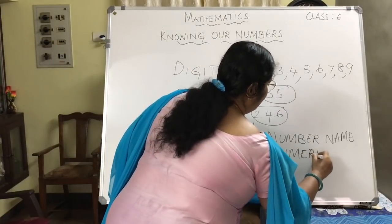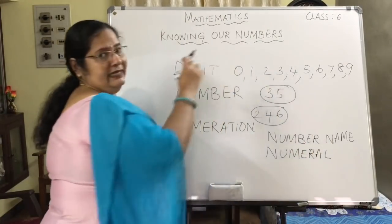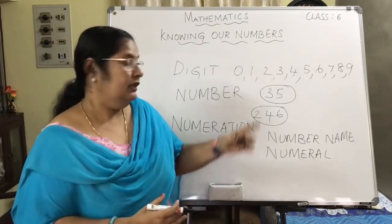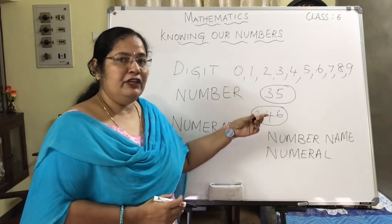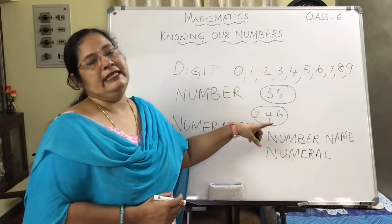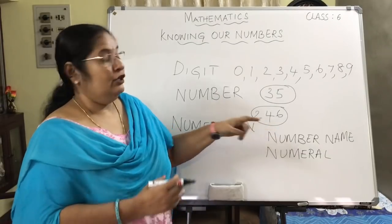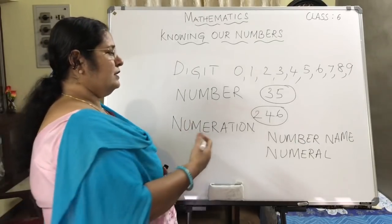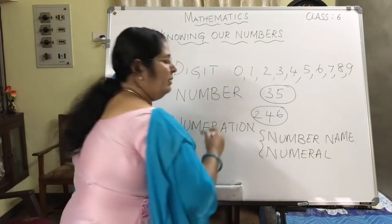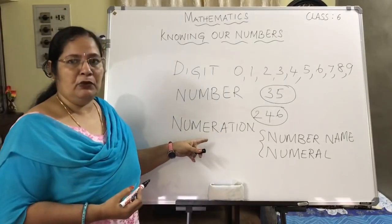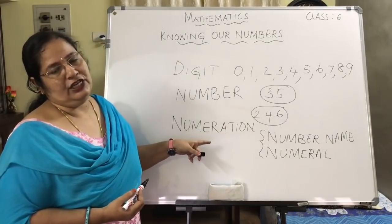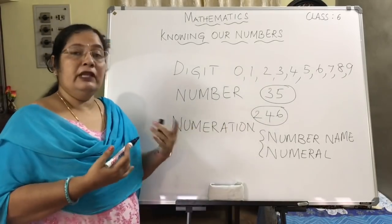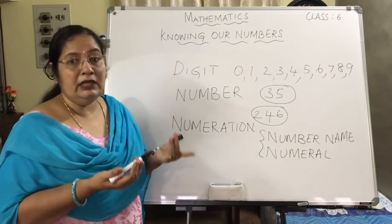So what is a numeral? When you write it as the digits — that is, 3 and 5 put together — you write it as 35, and you call it a numeral. And when you say 'thirty-five,' that is its number name. So the process or method where we use both number name and numeral is what is known as numeration. Numeration is about the number name or the numeral.